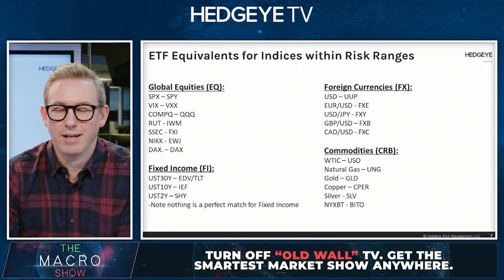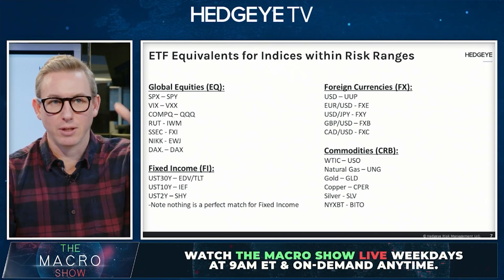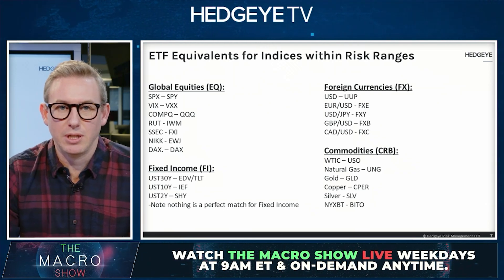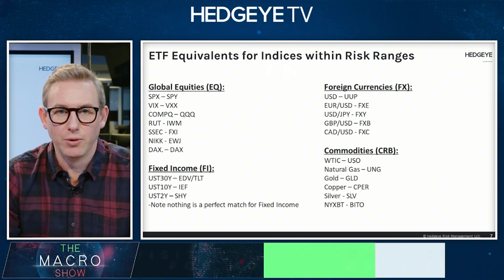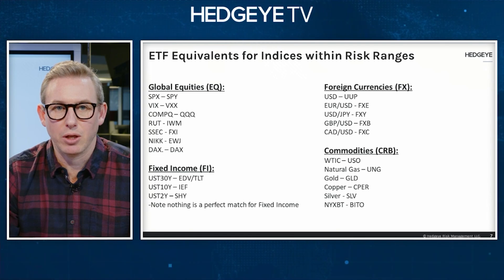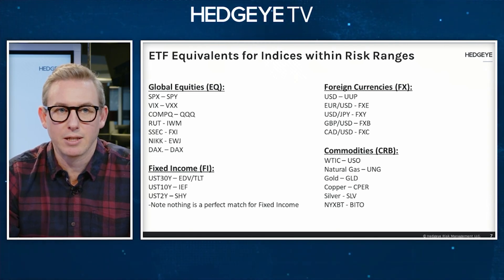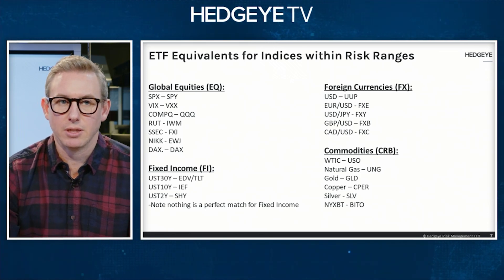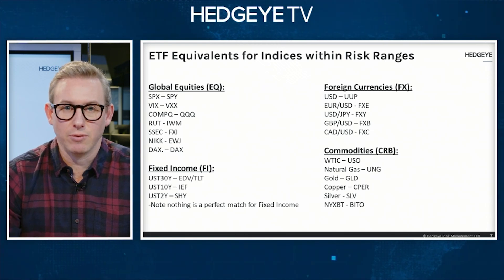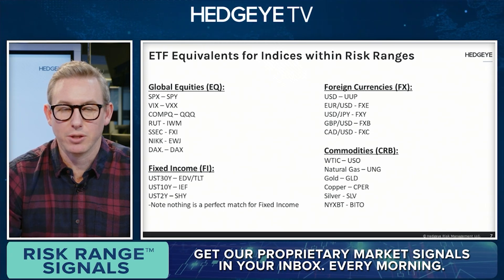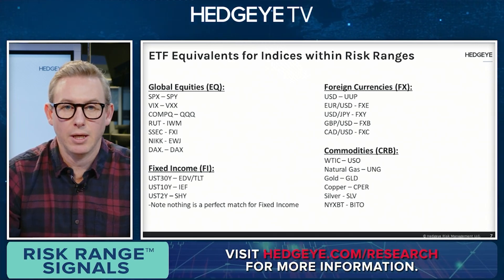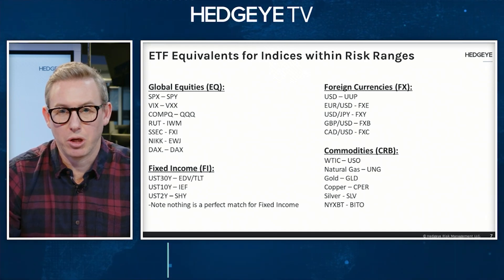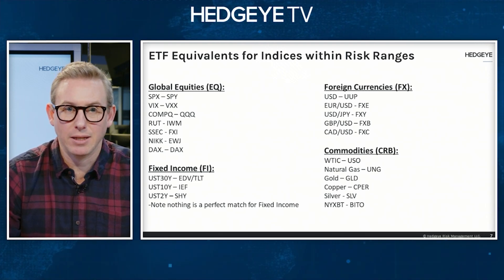Gold lives with commodities on the risk ranges, so I grouped them there. For WTIC, that'd be USO; natural gas, UNG; gold, GLD; copper, CPER; silver, SLV; and bitcoin, represented on the risk range product as NYXBT, maps to BITO. For copper, there's also COPX — C-O-P-X — which includes copper miners, so it's a bit more on the equities front. If copper is at the low end of the range in a bullish trend, that doesn't necessarily mean COPX is also at the bottom, but it's one way of taking that information and deploying it into a slightly higher beta exposure.